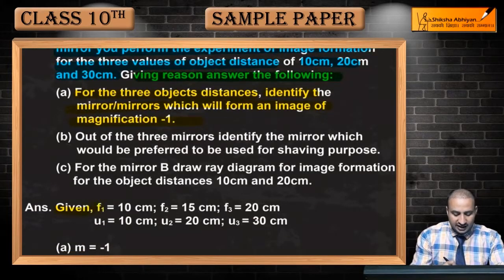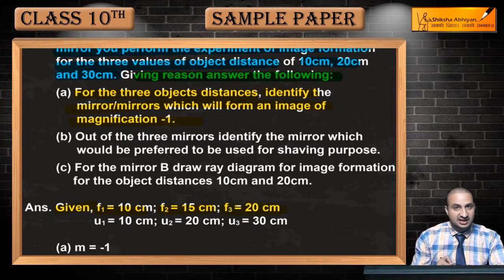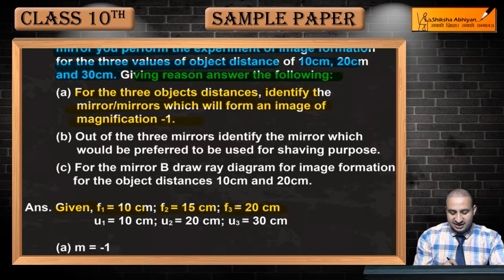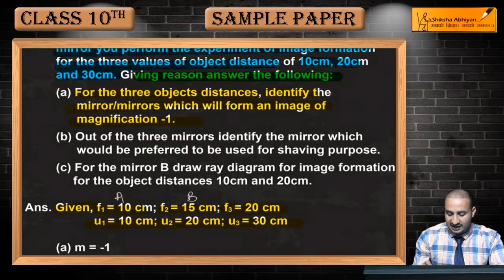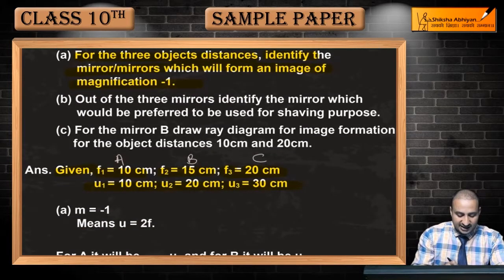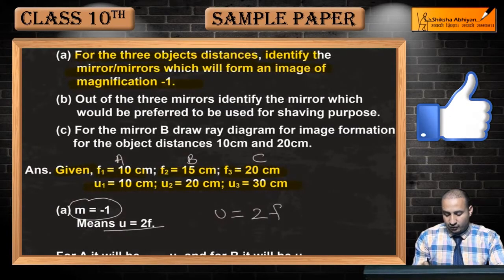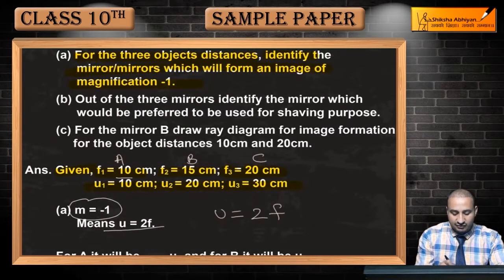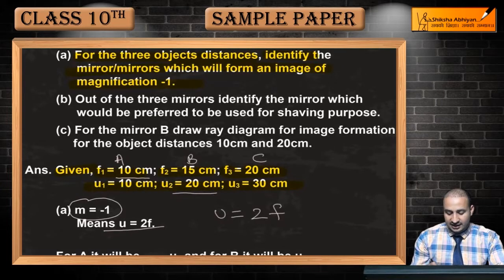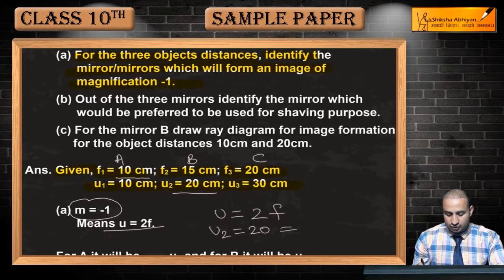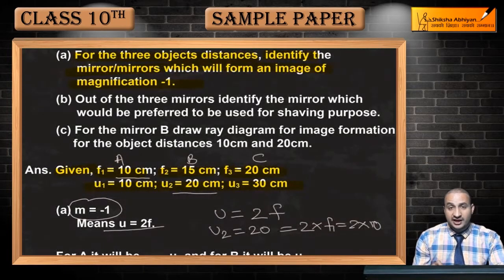To agar yahaan par jo given hai, given mein hum dekhein to focal length of A mirror ki 10 centimeter, focal length of B ki 15 centimeter or C ki 20 centimeter. Or jo object ke distances hain wo 10, 20 or 30 centimeter yahaan par liye gaye hain. To ye mirror A ke liye, ye mirror B ke liye, ye mirror C ke liye. Aap jante hain magnification minus one ka matlab kya hua: that is u is equal to 2f, yani u jo hoga wo twice of f hoga. To agar mein sabse pehle yahaan par f1 10 centimeter ko dekhoon to uska twice jo hai, object ka distance 20 centimeter hoga. Yani agar mein yahaan par u2 leta hoon, that is 20, that is twice of f1, yani ke 2 into 10. To first mirror A ke liye...